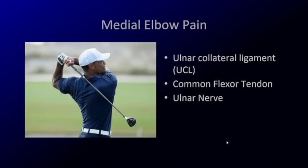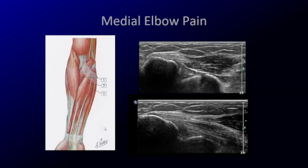For medial and lateral elbow pain, the approach is similar — looking at tendons and ligaments. On the medial elbow, we focus on three structures: the ulnar collateral ligament, the common flexor tendon, and the ulnar nerve. The flexors come together to form a common flexor tendon — you see this fibrillar structure, and here's the myotendinous junction. Deep to that, you have the ulnar collateral ligament, which bridges this joint, connecting bone to bone. The common flexor tendon and ulnar collateral ligament can appear fan-shaped.